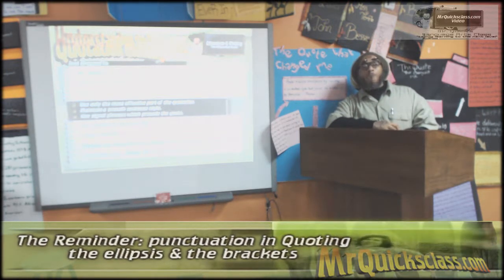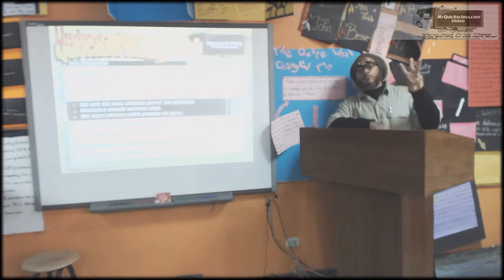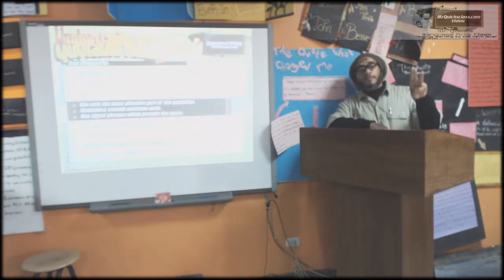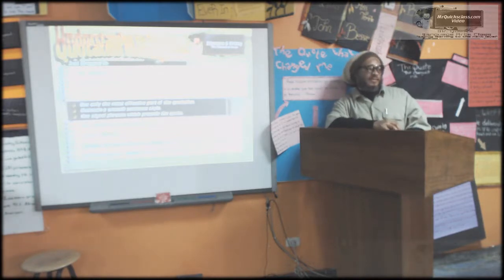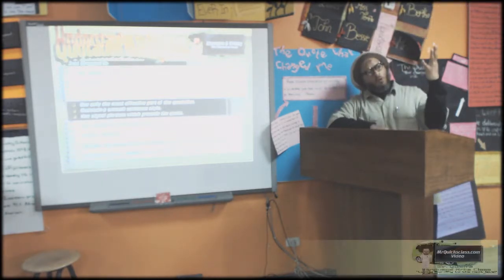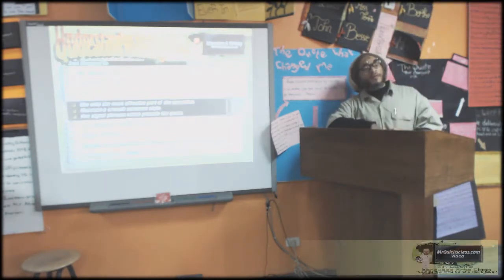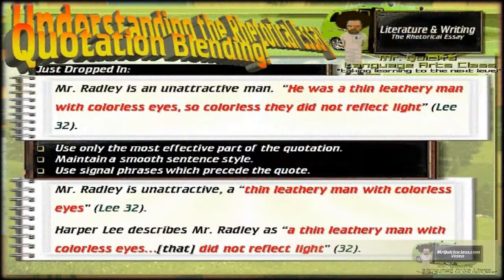When you are omitting words in a sentence, three dots. When you are omitting sentences, or even paragraphs, four dots. It's called an ellipsis. So what about paragraphs? Four dots. And a couple of sentences? Three.